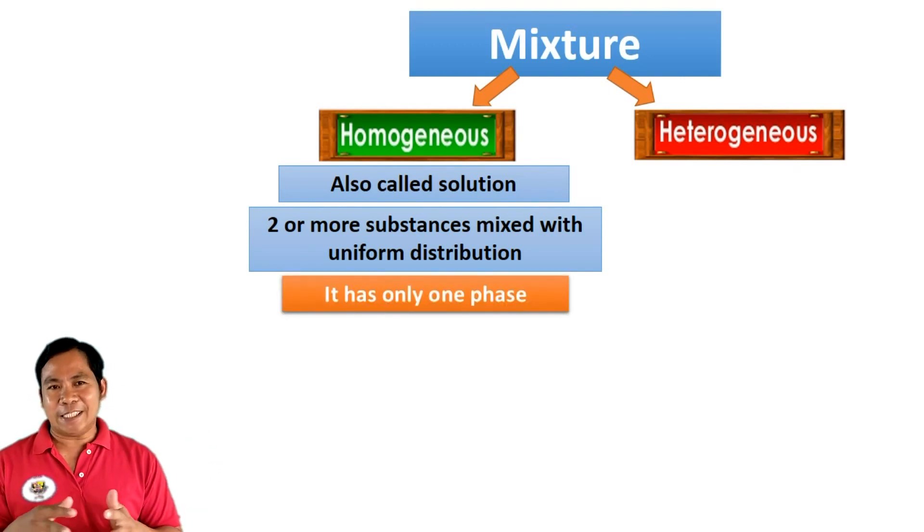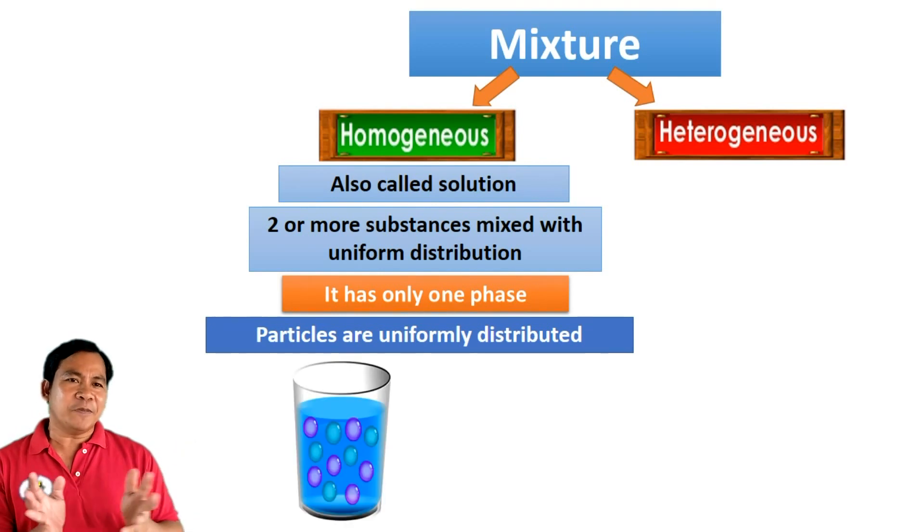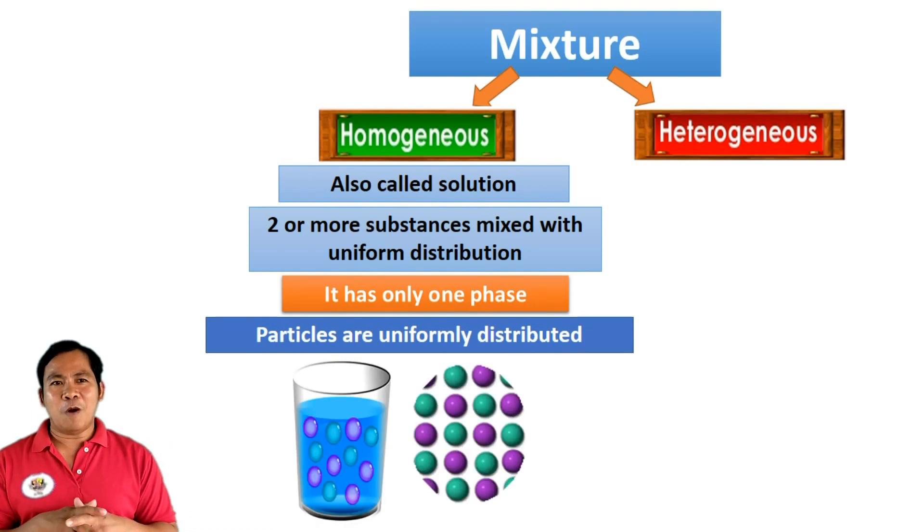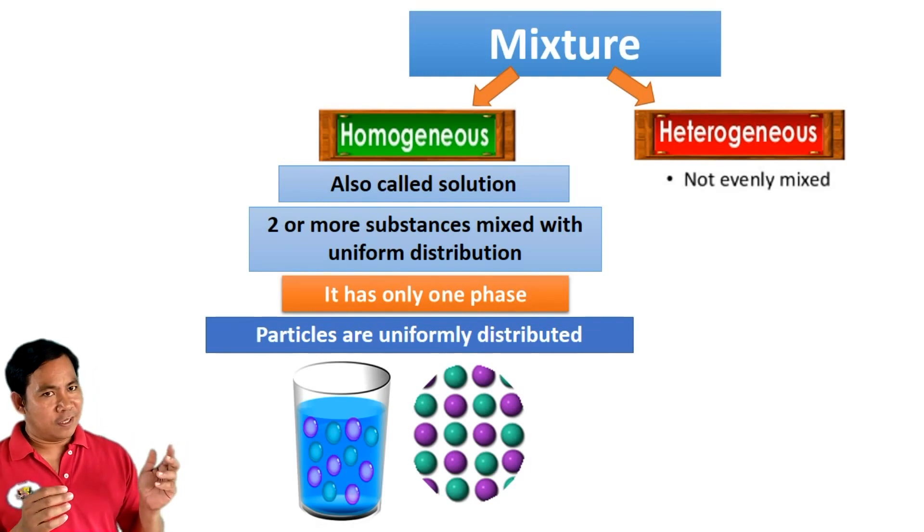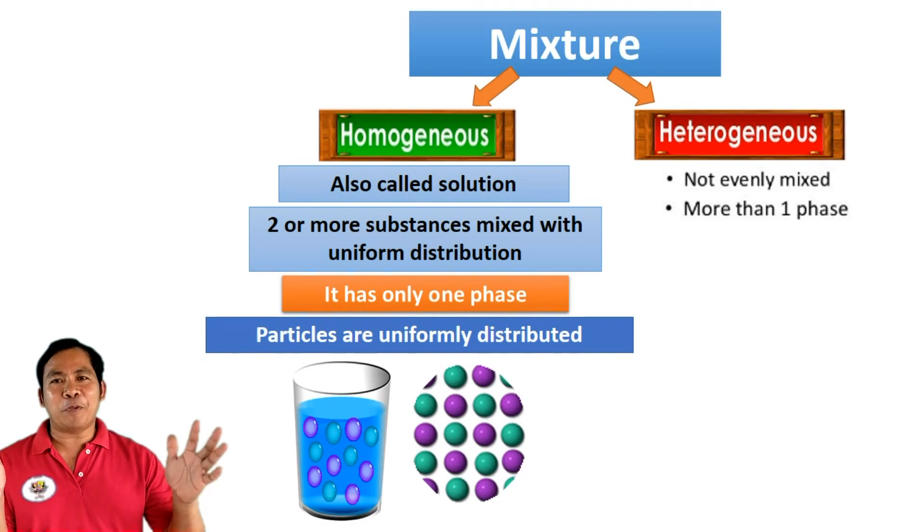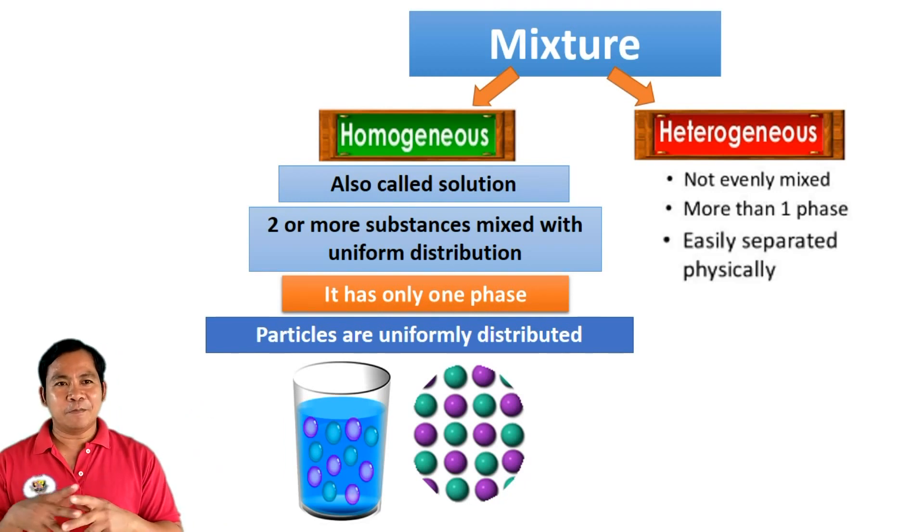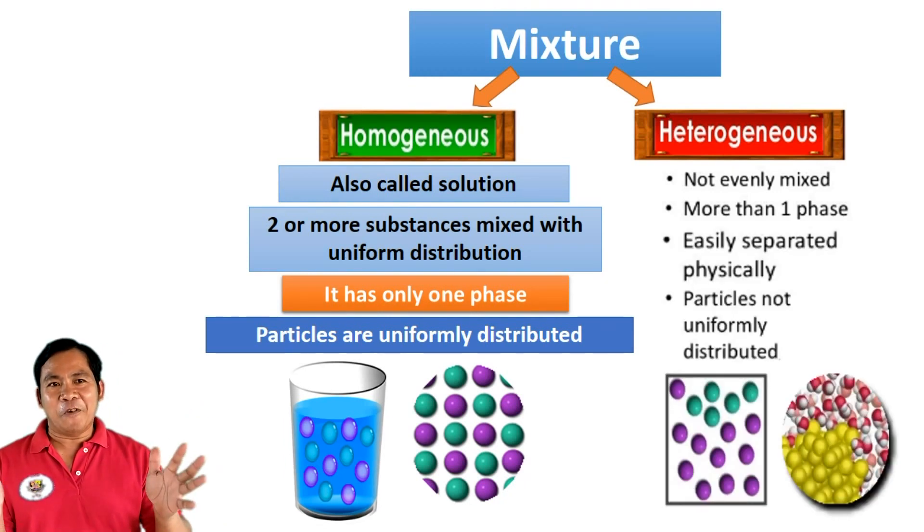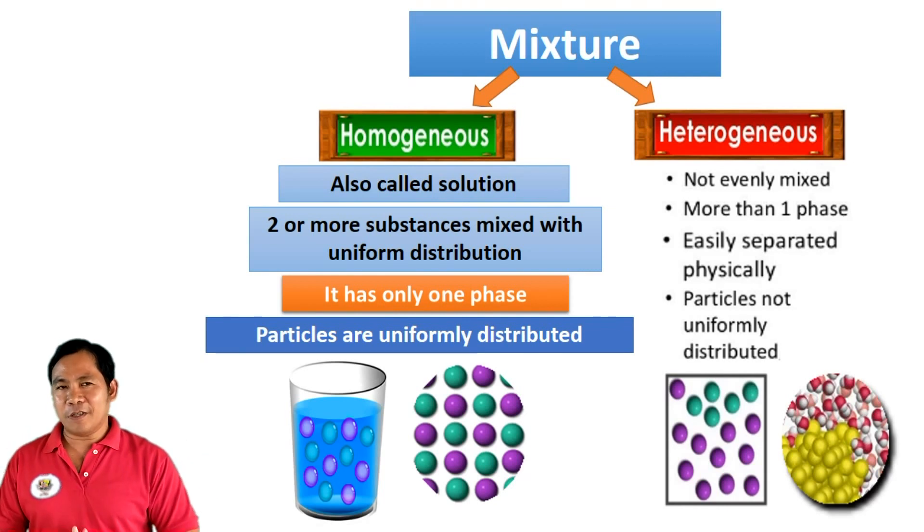It has only one face. Particles are uniformly distributed. While heterogeneous is not evenly mixed, more than one face, easily separated physically with non-uniformly distributed particles.